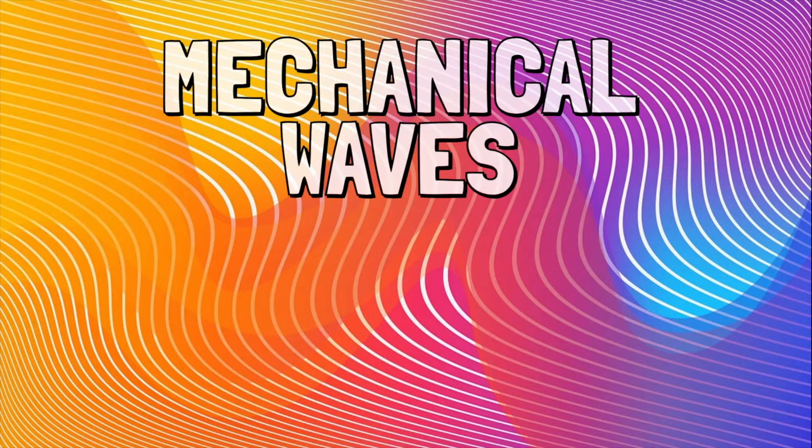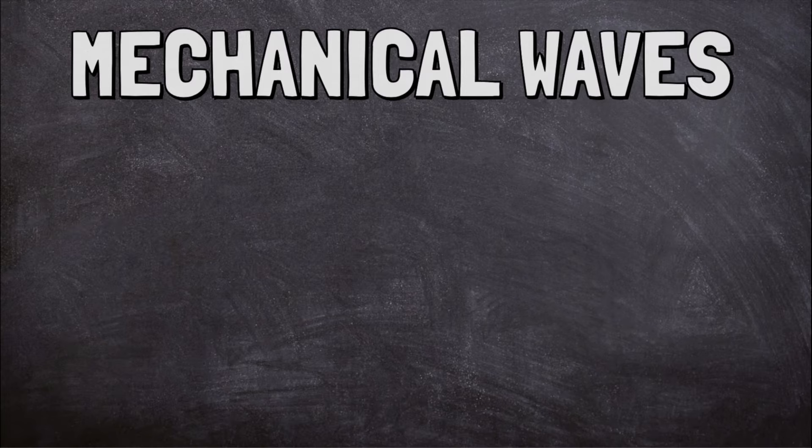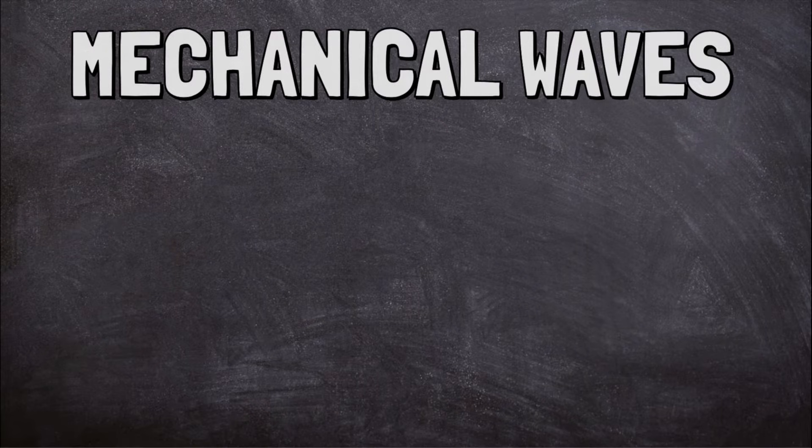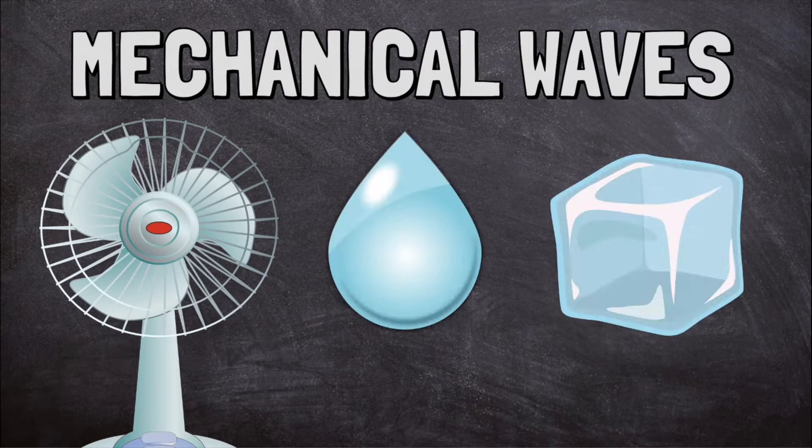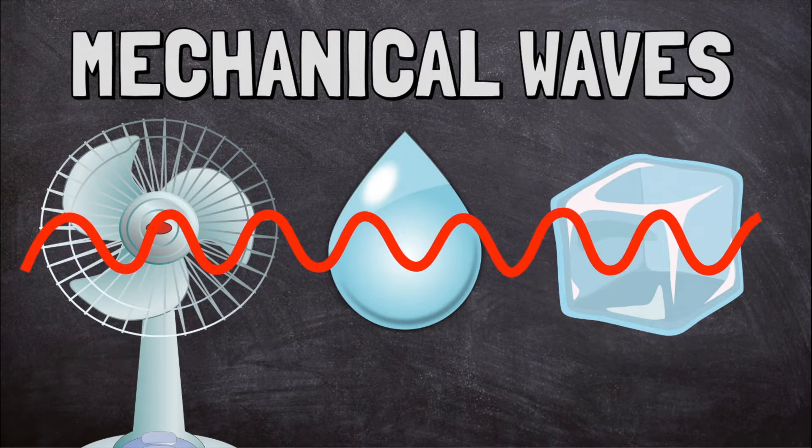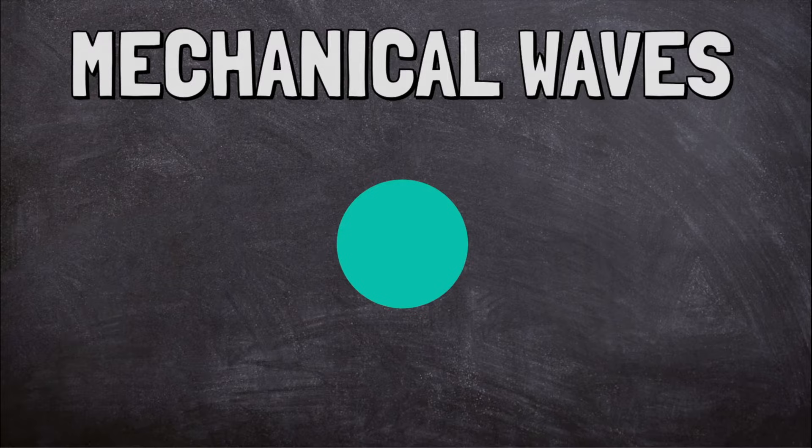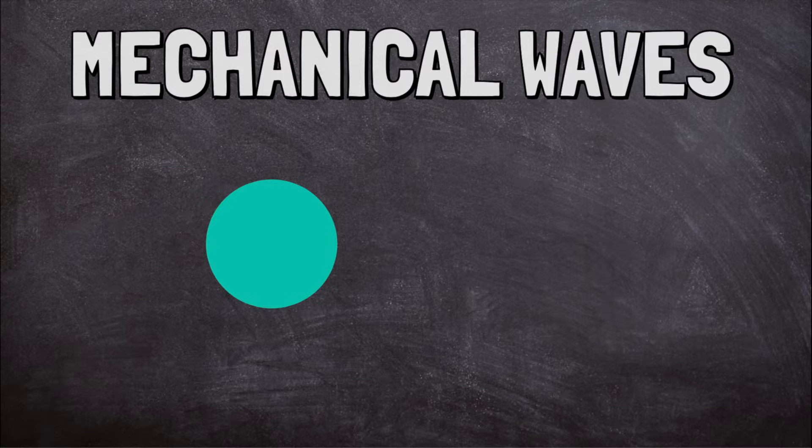There are two types of waves, mechanical and electromagnetic. Mechanical waves have to travel through some type of matter, like air, water, or solid objects. This is because mechanical waves move when molecules in the matter bump into each other. These collisions pass on energy.